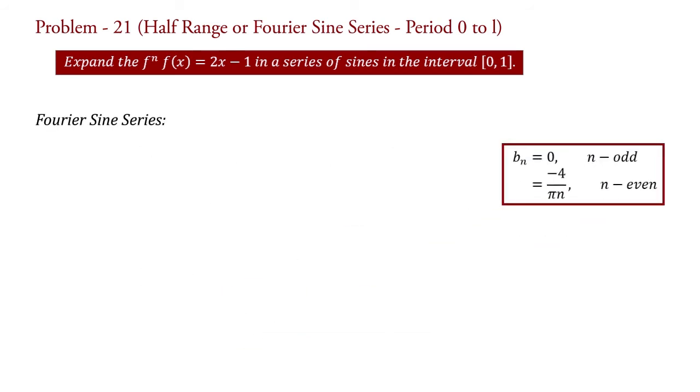Now, Fourier sine series for intervals 0 to L is f(x) = summation n = 1 to infinity of bn sin(nπx/L). Putting the value of bn and taking L = 1, we get f(x) = summation n even. Taking -4/π outside the summation, we get f(x) = -(4/π) summation n even of sin(nπx)/n.